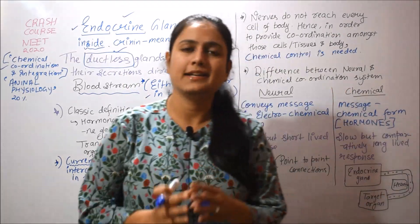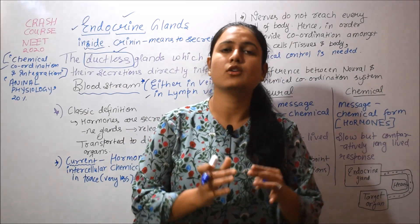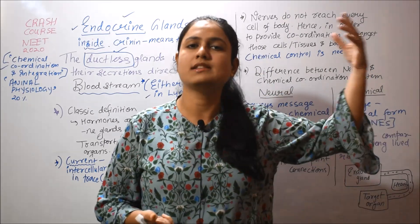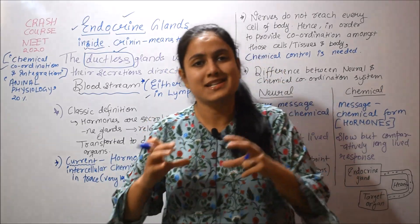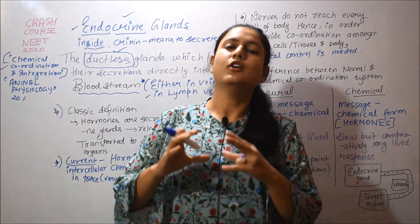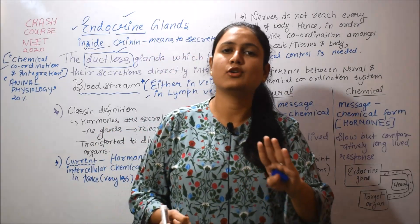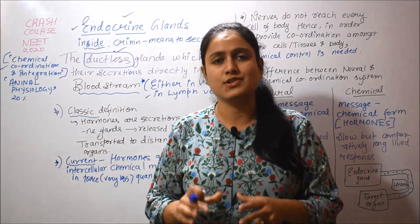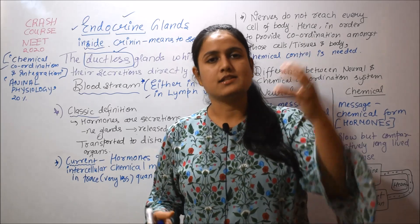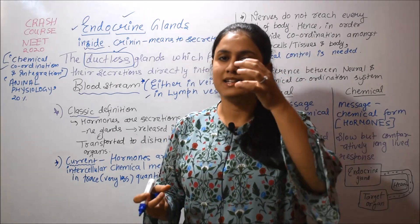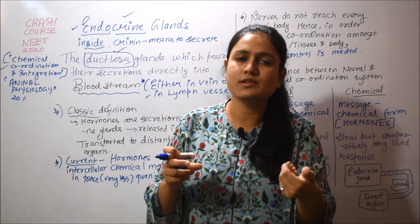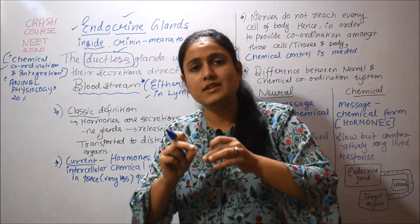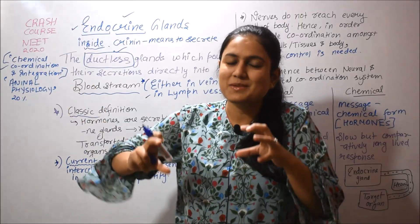Now, regarding the definition of endocrine glands, NCERT gives two definitions: a classical or conventional definition from the old age, and a recent definition which we now follow. According to the classical definition, hormones are produced by endocrine glands, poured inside the blood vessels, and they reach a distant target organ.